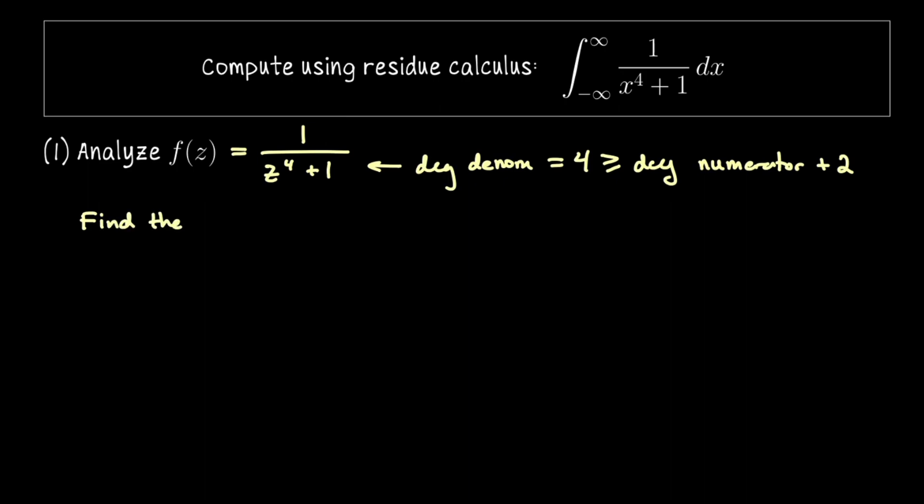Okay the next step now that we've identified f of z is to find the singularities of this function. So those are the values of z in the complex plane that make the denominator 0 or equivalently z to the 4th is negative 1. There are different ways that you could approach this. If you're watching this you might instantly know what the solutions to this equation are, but let me take you through the process.